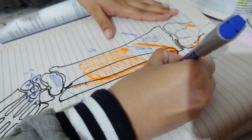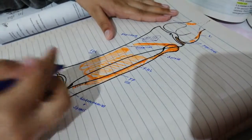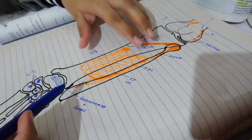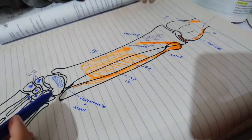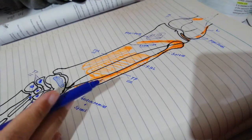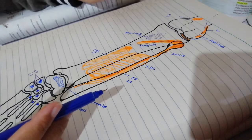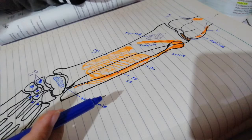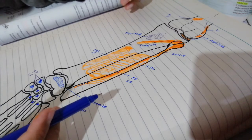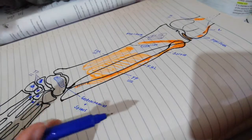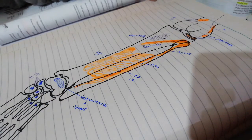The insertion of the soleus is the same as that of the gastrocnemius — via the tendocalcaneus. The soleus crosses only the ankle joint, so its function is plantar flexion of the ankle joint. However, the soleus is a much more powerful muscle and acts as the first gear — it overcomes the inertia of the body and initiates walking.